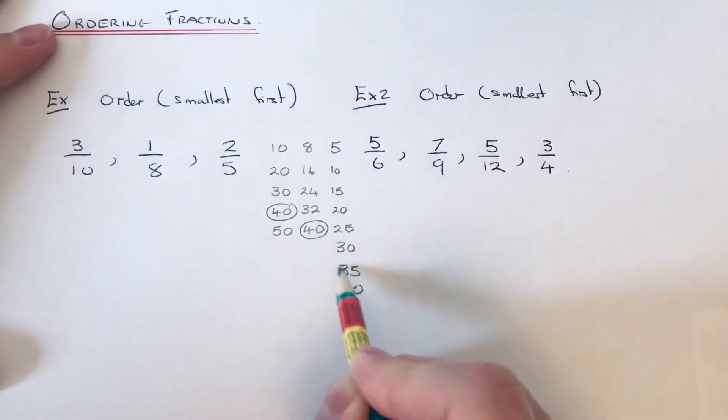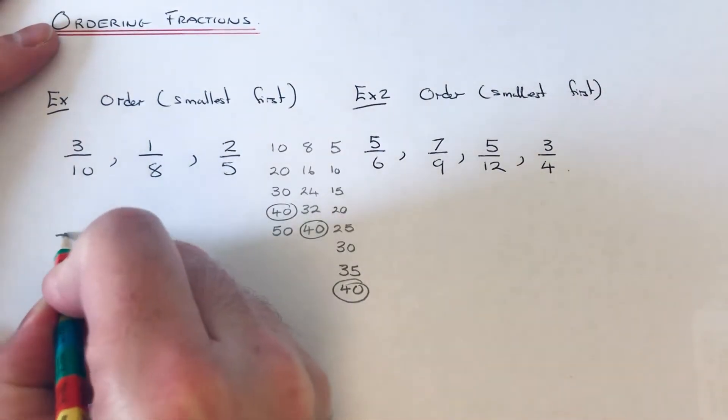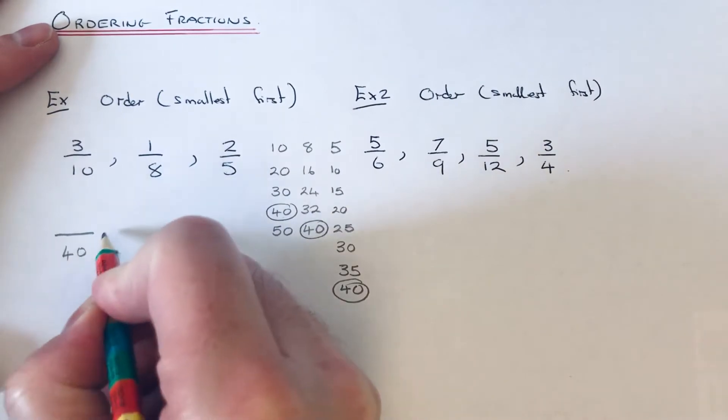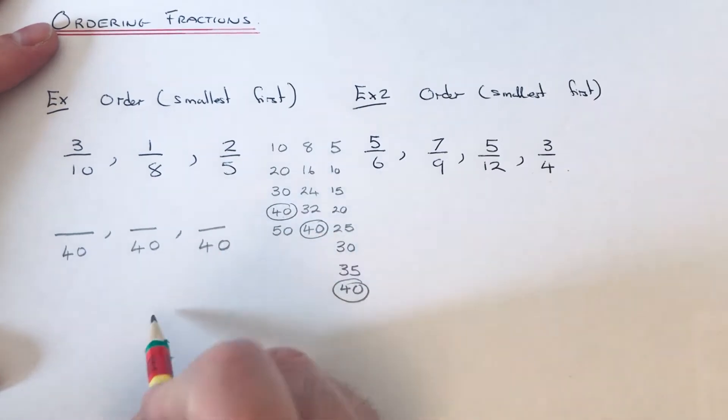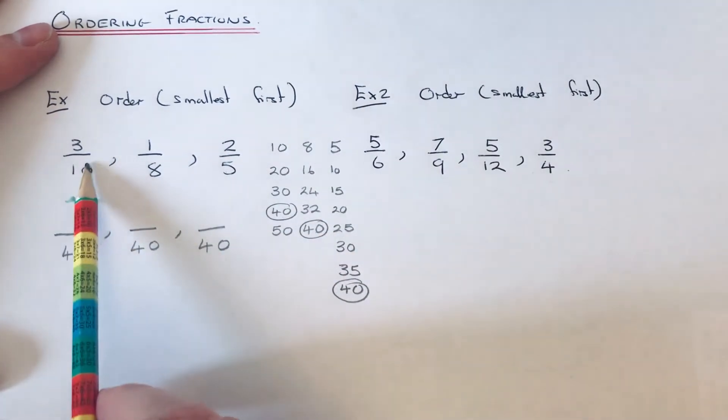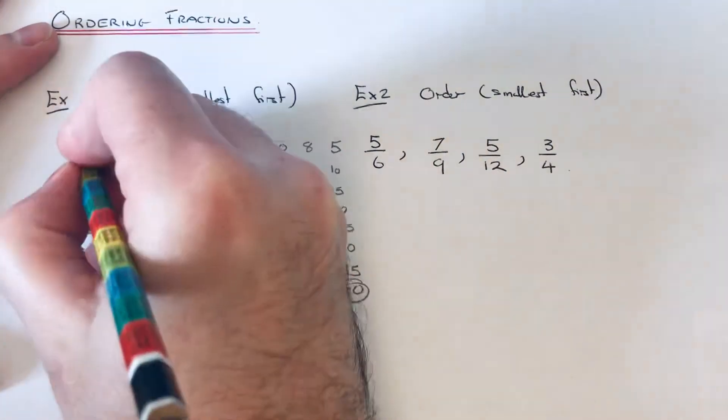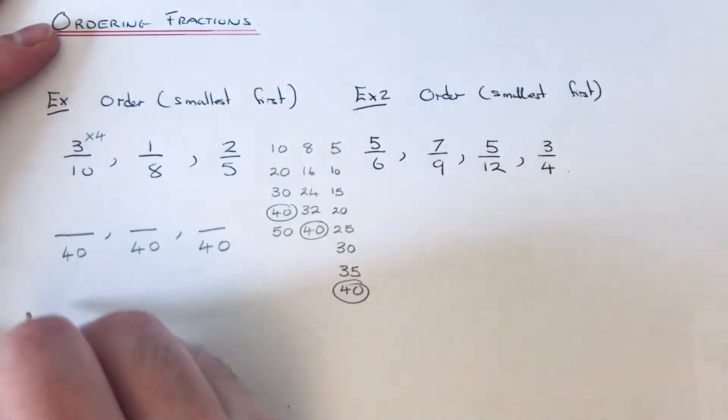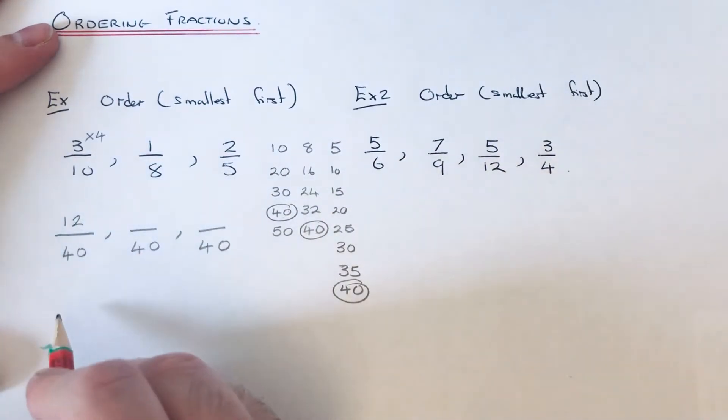We're going to convert all our fractions to 40ths. How many times did 10 go into 40? It went 1, 2, 3, 4. So we need to multiply our top number here by 4. 3 times 4 is 12, so 3/10 is the same as 12/40.